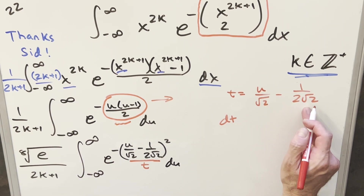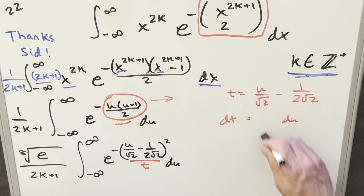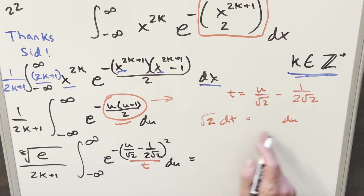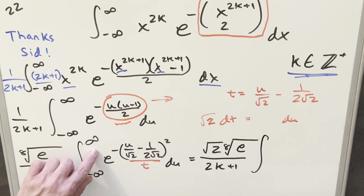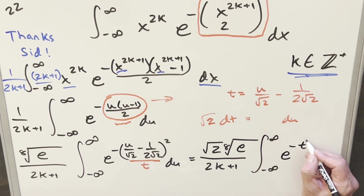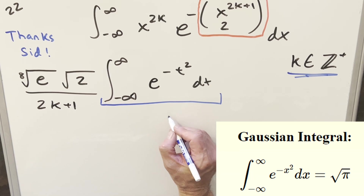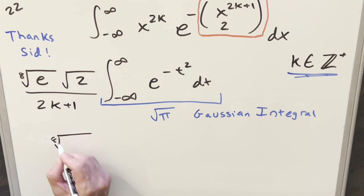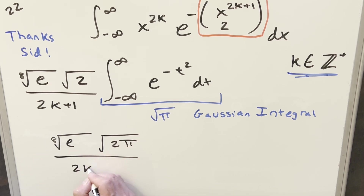Substituting, I bring the root 2 out front of the integral. The bounds don't change — plugging in infinity still gives infinity, and minus infinity still gives minus infinity. Everything simplifies down to e to the minus t squared dt. This is the full Gaussian integral, which equals root pi. So combining everything, the final answer is the eighth root of e times root(2pi) over (2k+1).